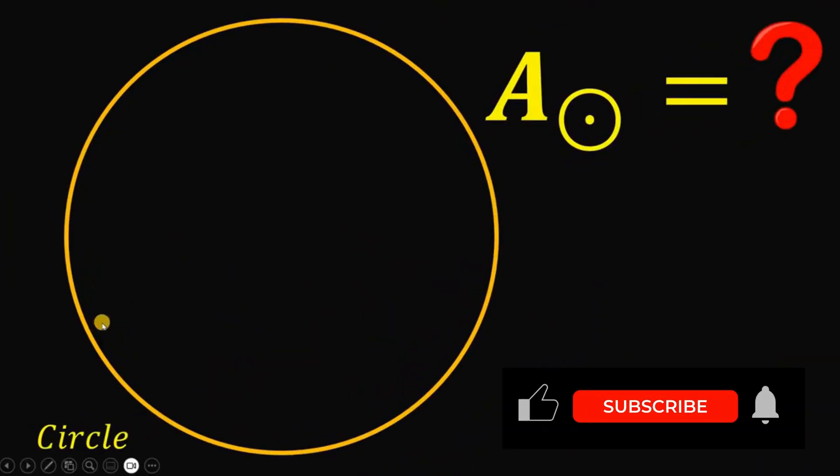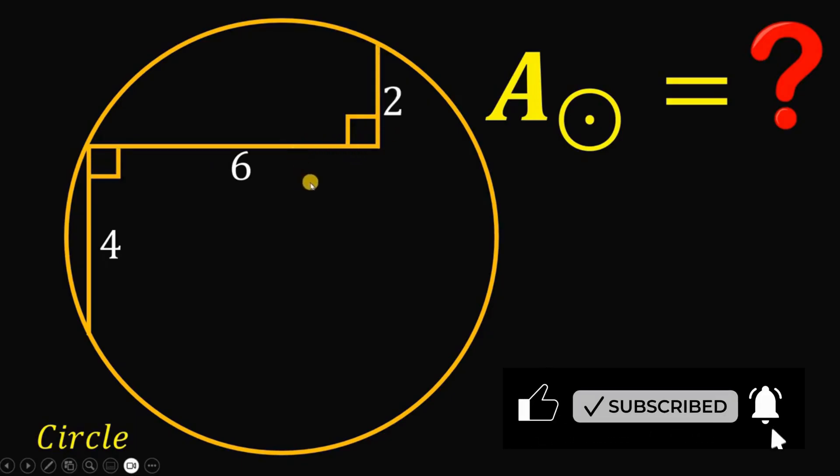Given the circle, let's draw a chord like this with a length of 4 units. Now from this endpoint, let's draw a segment which is 6 units and perpendicular to this chord, and let's draw a segment which is 2 units that is perpendicular to the previous segment.